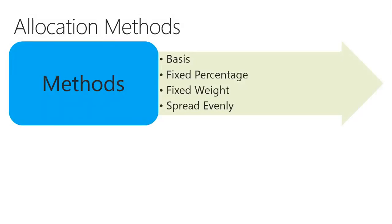We have four allocation method types: basis, fixed percentage, fixed weight, and spread evenly. Fixed percentage will allocate all expenses in that particular proportionate percentage. Fixed weight will automatically distribute the amount in a proportionate ratio. Spread evenly is easy to understand — if you are using three dimensions it will allocate 33.33% to each; if you have four it will allocate 25%; if you have five dimensions it will allocate 20% to each.